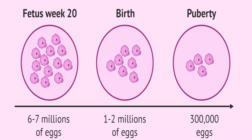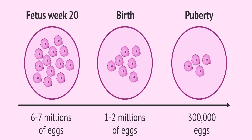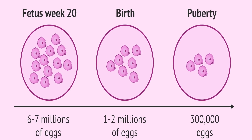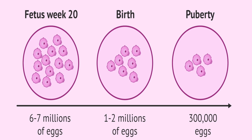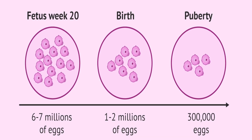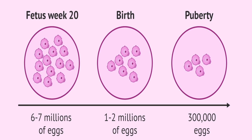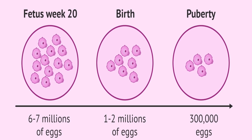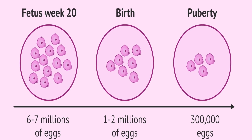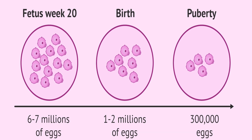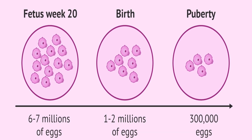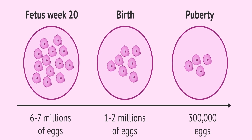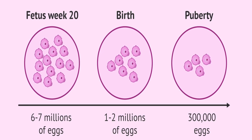A female is born with a fixed number of eggs in her ovary. Once a female child is born, she has roughly 1 to 2 million eggs in her ovaries and these eggs keep on degenerating with the passage of time. As age advances, the number of eggs keeps reducing. Once the reproductive age group starts, every month some 15 to 20 eggs will come out, one will grow, and others will degenerate. This is how a female uses her eggs from age 15 to roughly 45 years.